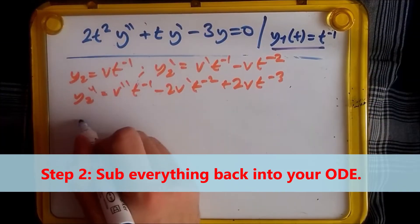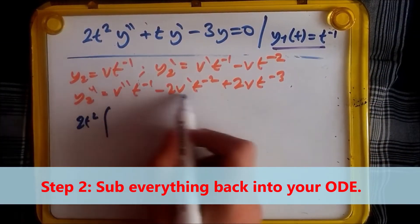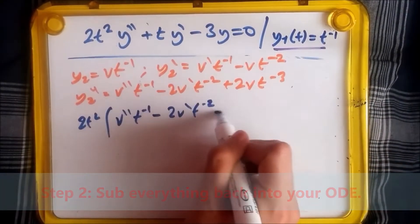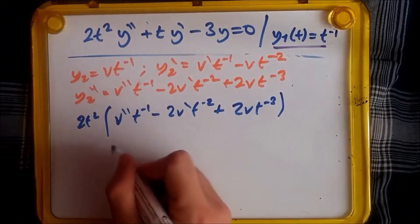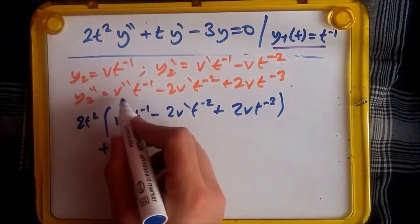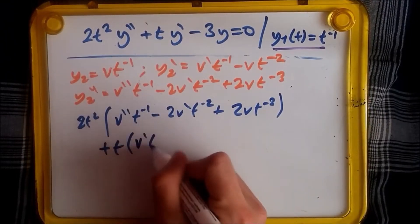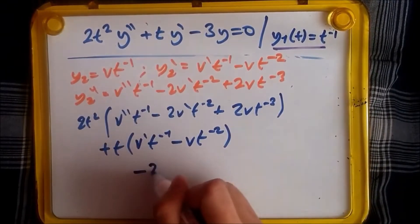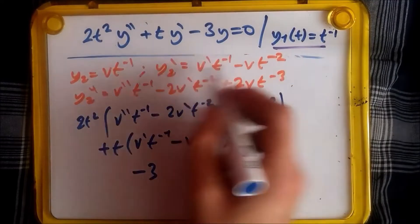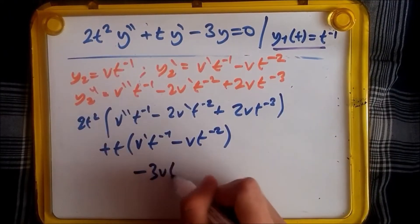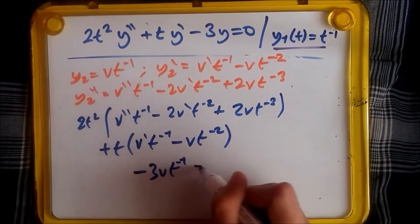Plugging in each one, first we've got two t squared bracket plus t bracket, now y prime which is here, minus three times the original y which is v times t to the power minus one equals zero.